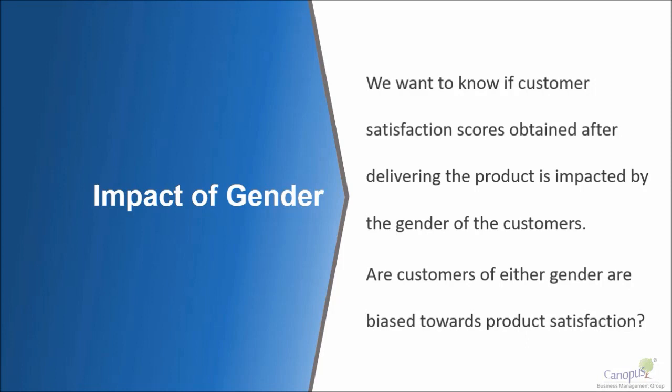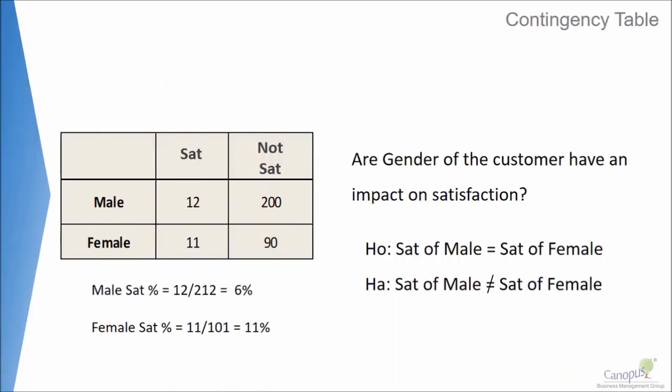In other words, are customers of either gender biased towards the product satisfaction? So let's look at this data. On your left side, I have presented the data of satisfied and dissatisfied customers by gender. We have 12 males who are satisfied and 11 females who are satisfied. The number of people who are not satisfied is 200 male and 90 female.